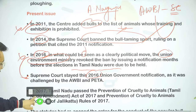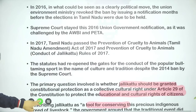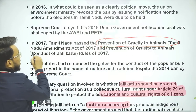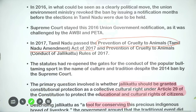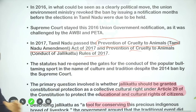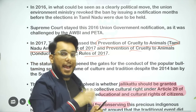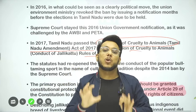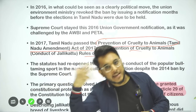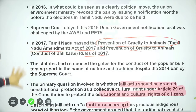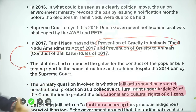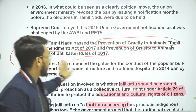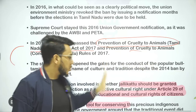Finally, in 2017, Tamil Nadu government passed the Prevention of Cruelty to Animals (Tamil Nadu Amendment) Act 2017 and Prevention of Cruelty to Animals Rules 2017, which gave an exemption to the Jallikattu festival — bulls can be used and it would not be considered cruelty. Jallikattu came back into existence, but petitions again went to the Supreme Court.